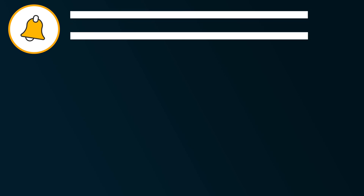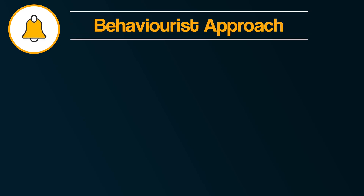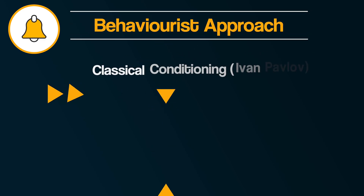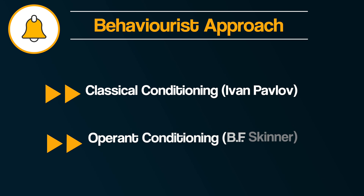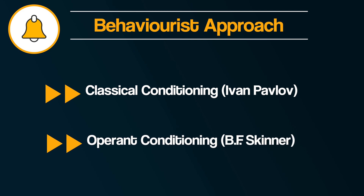Behaviourists break learning down into two parts. One: classical conditioning and the work of Ivan Pavlov. And secondly: operant conditioning and the work of B.F. Skinner. We're going to explore classical conditioning in this video and operant conditioning in the next one.